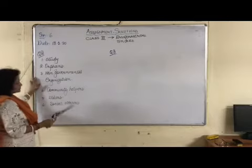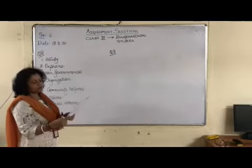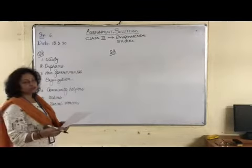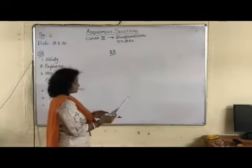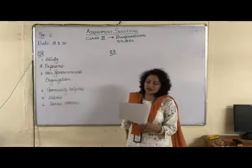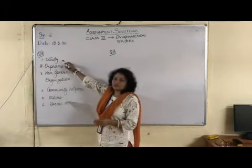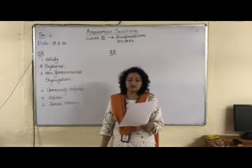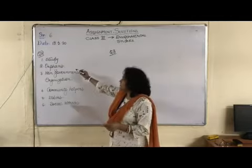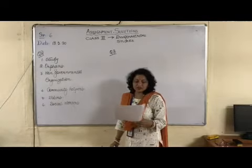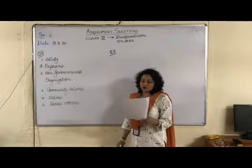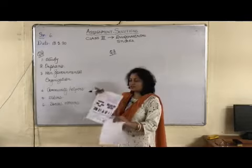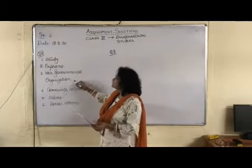We will proceed to question number 2. Question number 2 was: read the chapter and fill in the gaps — the chapter 'People Around Us' — and we were supposed to fill the gaps. First: every child has a right to study. Number 2: Mother Teresa won a Nobel Peace Prize for her selfless service towards orphans. Number 3: Social workers form organizations called non-governmental organizations. You can write NGOs also, but you should write the full spelling.